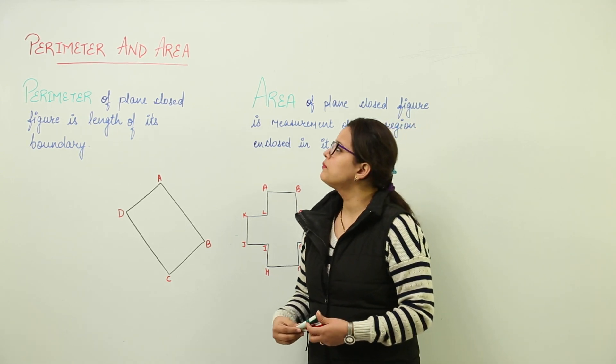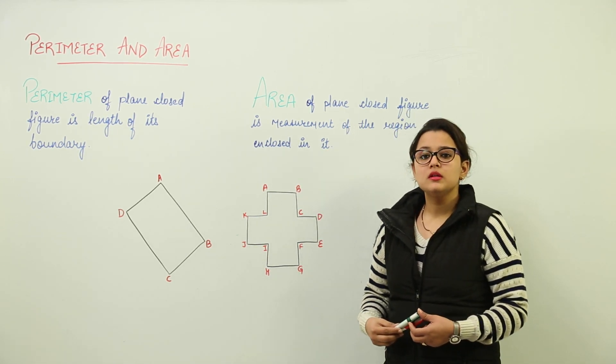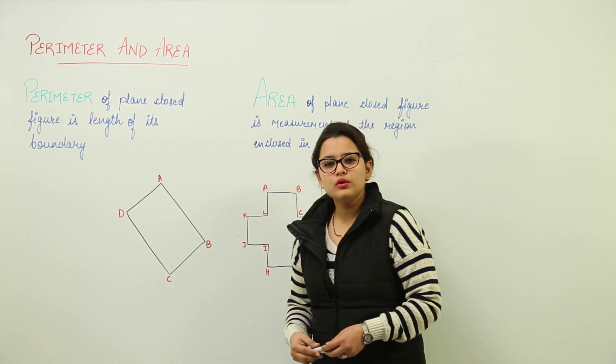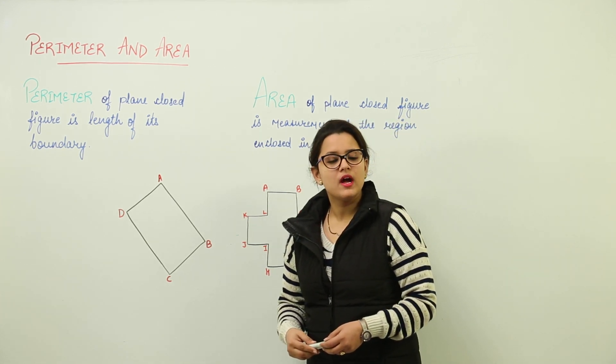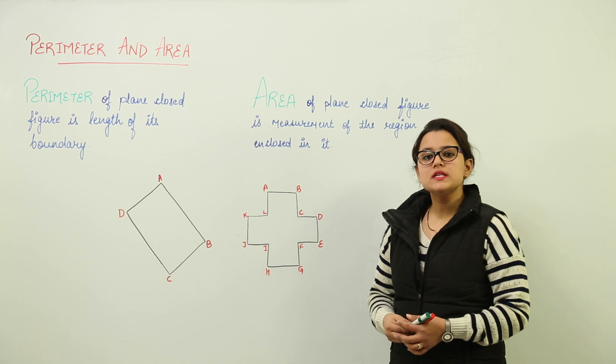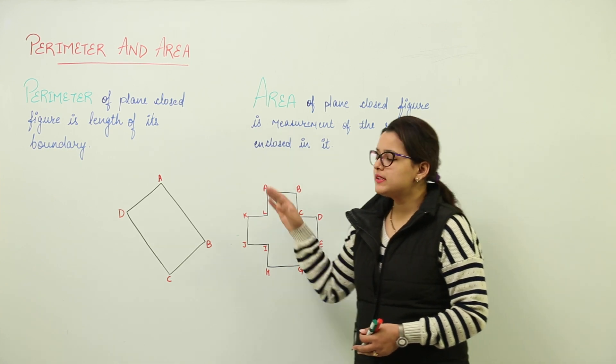So, the chapter is perimeter and area. In perimeter and area, what do you mean by the term perimeter and what is area? What is the difference between them? Let us discuss now.